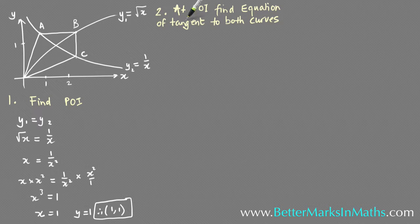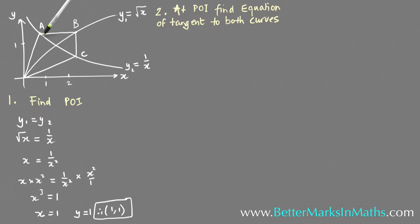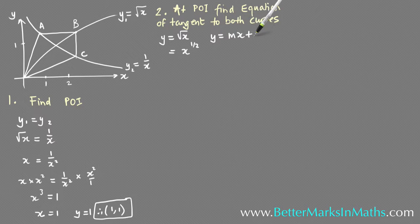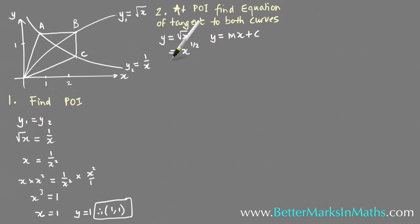Part B asks you to find the equation of the tangent to both curves at the point of intersection. So at this point you can make a tangent to y equals the square root of x and also a tangent to y equals 1 on x — two tangents. Tangents are straight lines of the form y = mx + c, so you need to find m and c, but first find the gradient.